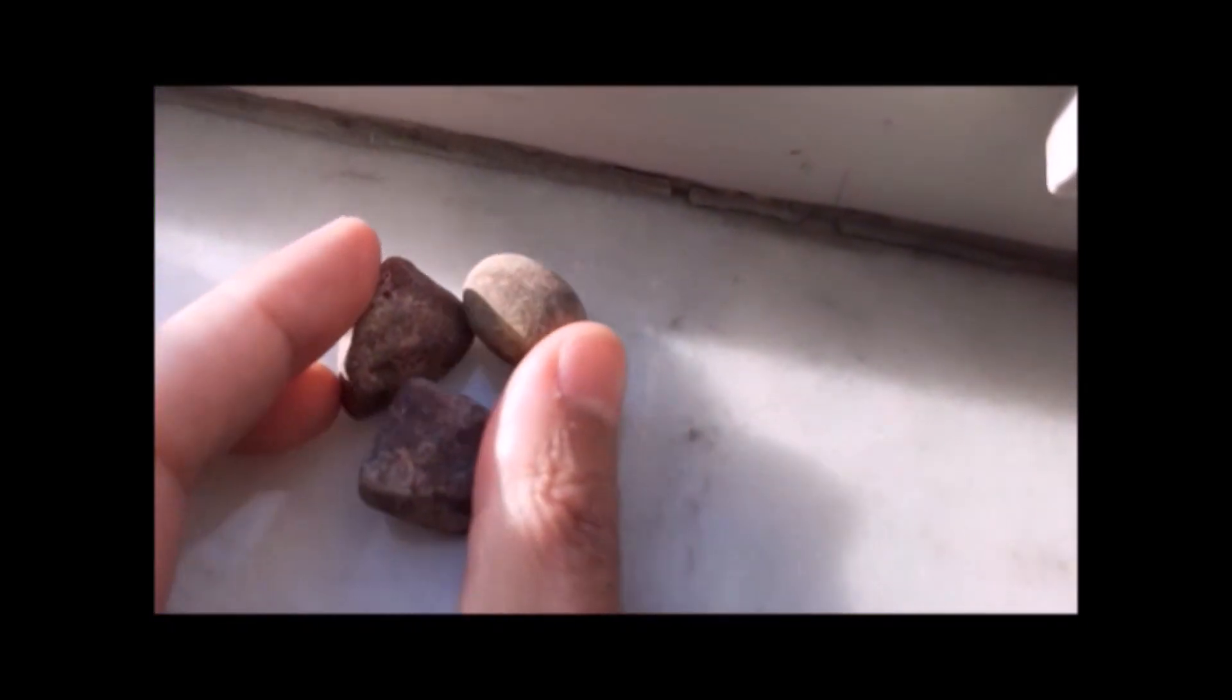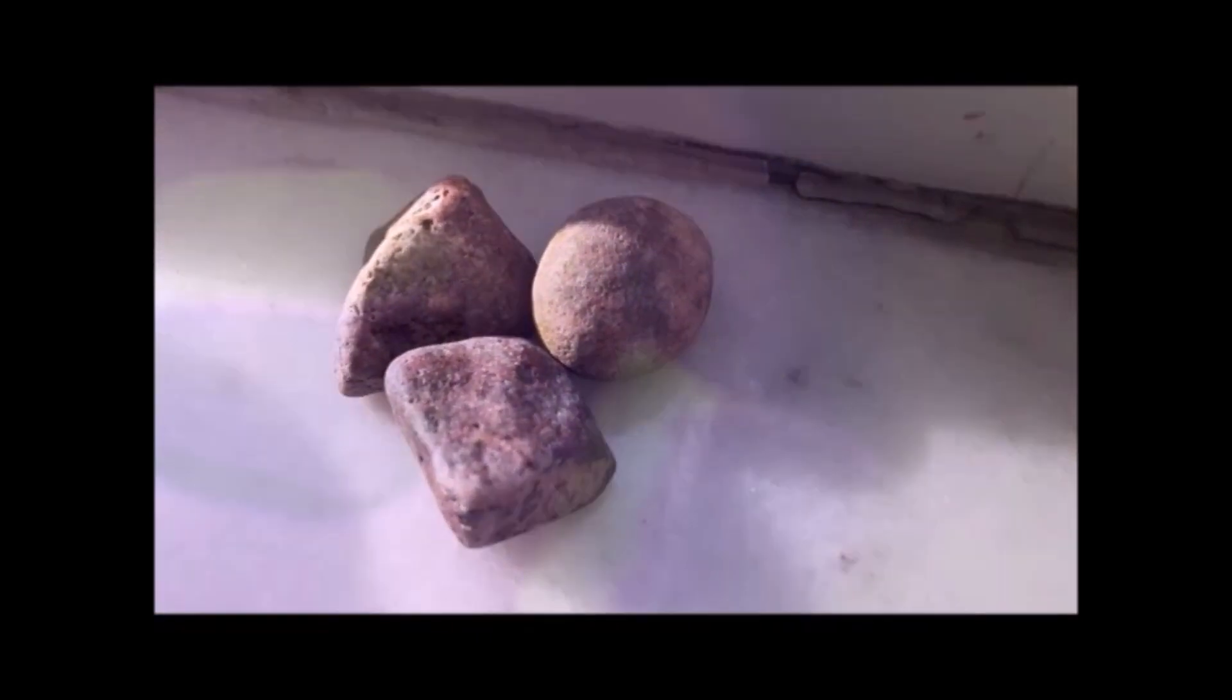A genuine ruby will typically fluoresce a red or orange color under UV light, while a synthetic or treated stone will not exhibit this reaction. It is important to note that not all natural rubies will fluoresce, and some treated rubies may fluoresce differently.